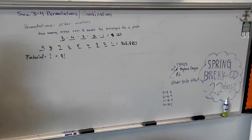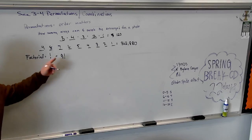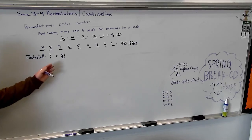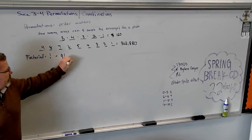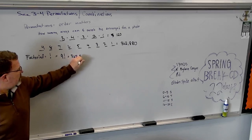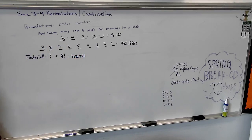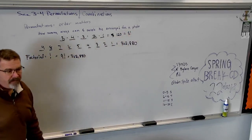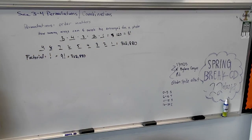It's called factorial. Factorial is represented by an exclamation point. Rather than me going nine times eight times seven times six times five on my calculator, I can just go nine factorial. And the calculator will do nine times eight times seven times six times five all the way down. That's five factorial.